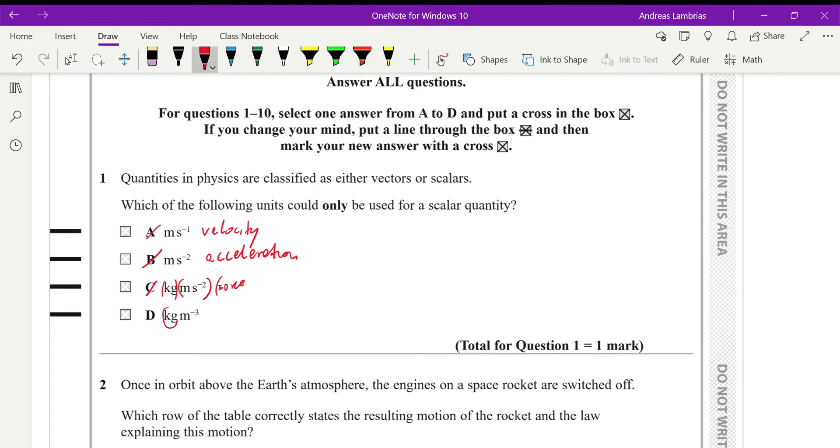So the only one which we have left is D, which is kilograms and meter cubed. That will be for density, because we know that density is mass over volume. Mass will be in kilograms, volume will be in meters cubed, both of these are divided. Therefore D is the right answer.